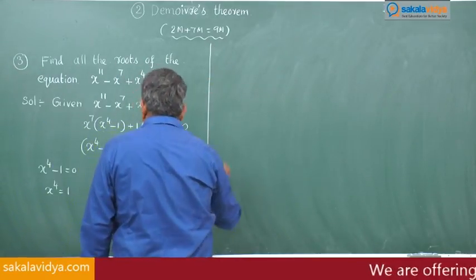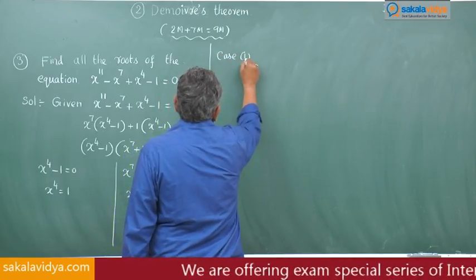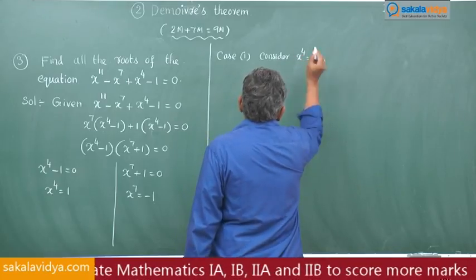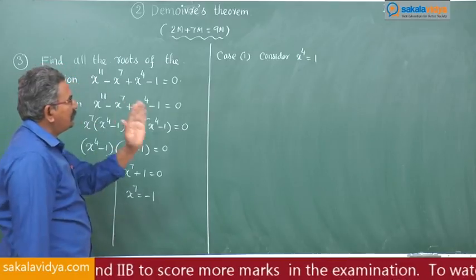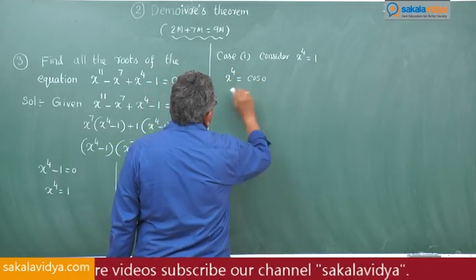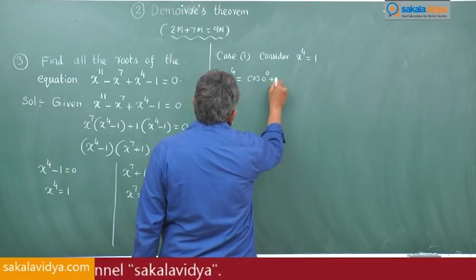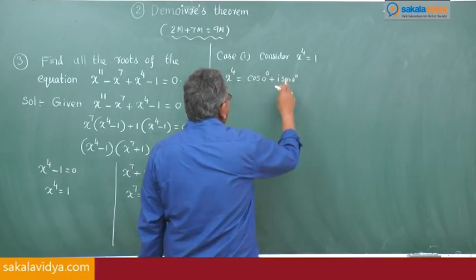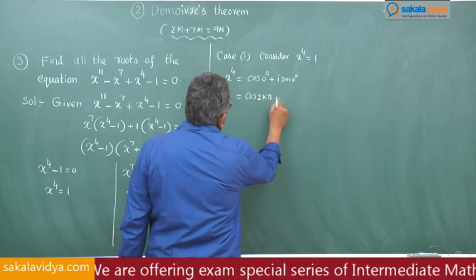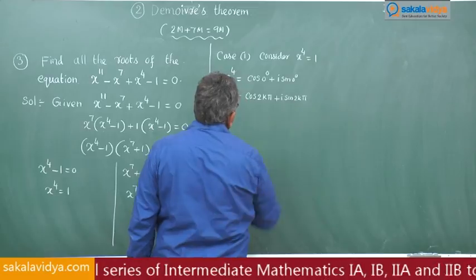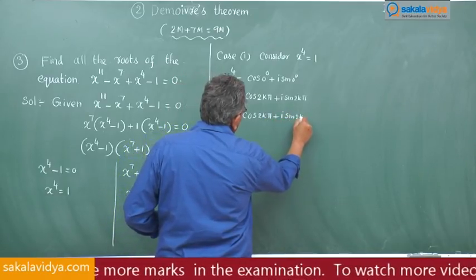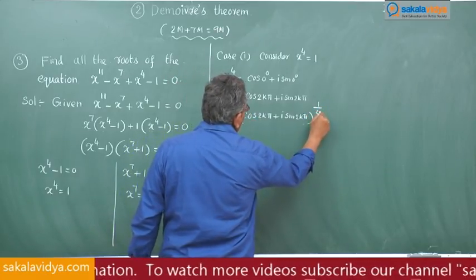Case 1: Consider x to the power of 4 is equal to 1. First write 1 in polar form. So x to the power of 4 is equal to cos 0 plus i sin 0, since cos 0 is 1 and sin 0 is 0. This can be written as cos 2kπ plus i sin 2kπ. So x is equal to cos 2kπ plus i sin 2kπ, all to the power of 1 by 4 — that is the fourth root.